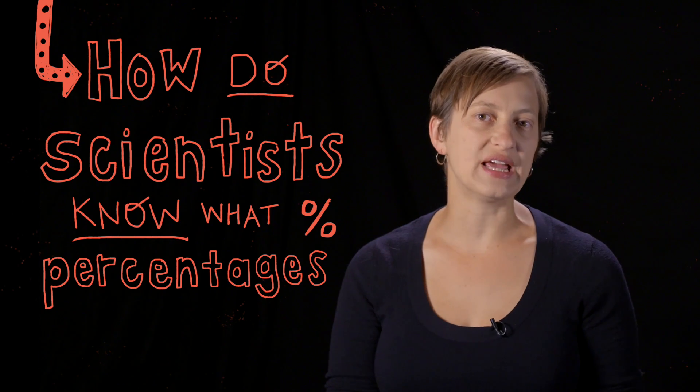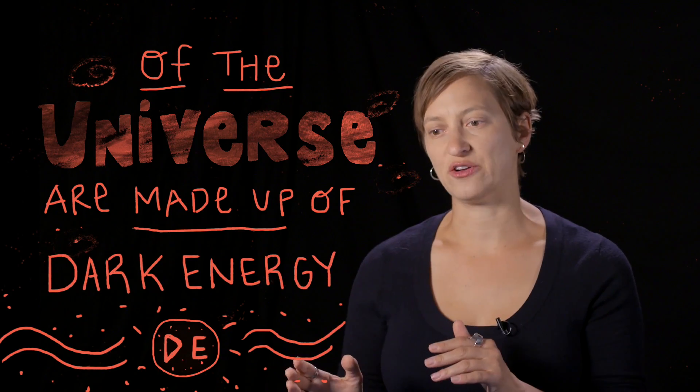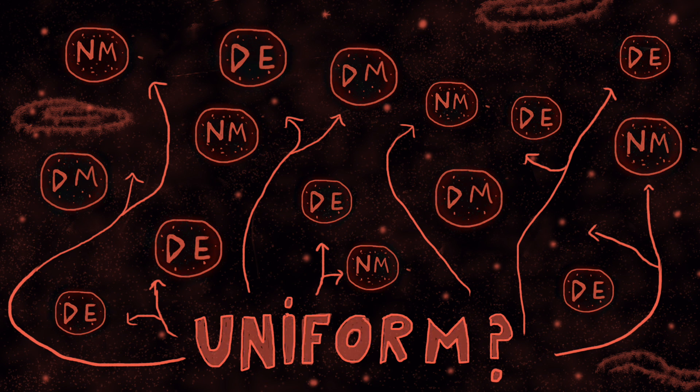How do scientists know what percentages of the universe are made up of matter, dark matter, and dark energy? And are the amounts of each uniform throughout the universe?